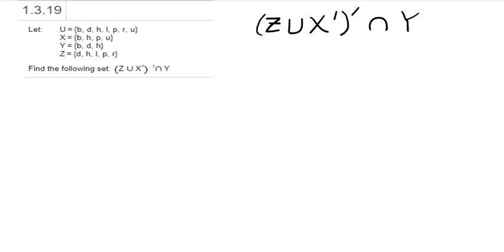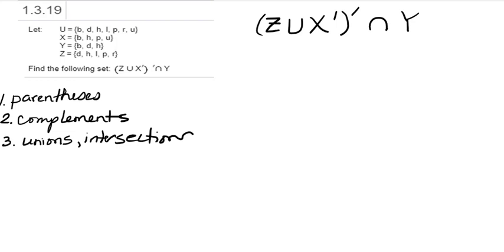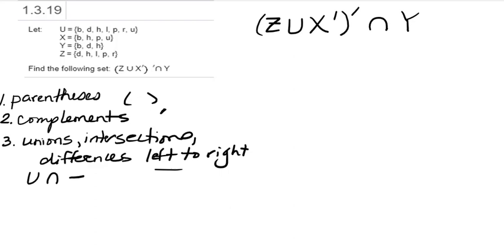When you're doing set operations, you want to observe an order of operations, kind of like in arithmetic. Start inside parentheses first. Then do any complements of individual sets within those parentheses, which take priority over unions, intersections, and differences. Those that remain are worked from left to right. So we have parentheses, then complements, and then unions, intersections, and differences, always working from left to right.